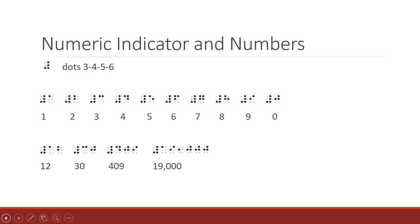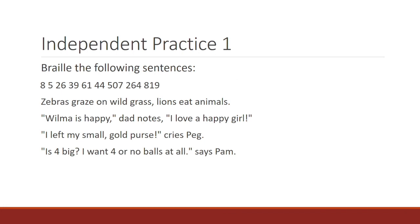Look at the number samples below: 12, 30, 409, 19,000. Notice that a numeric indicator was needed after the space and that a comma can be used between numbers without having to repeat the indicator. The next 14 slides contain all of the independent practices for lesson 3. I will give a brief explanation of each slide. You may choose to use the video to view the independent practice lessons or download the webinar materials from the description box below.